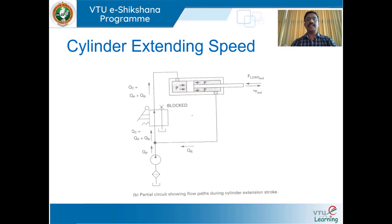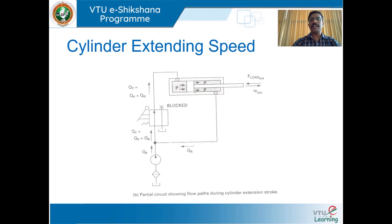We shall discuss the cylinder extending speed. A partial circuit shows flow paths during the cylinder extension stroke. The rod side oil is regenerated and, along with the pump flow, the regenerated oil enters into the blank end of the cylinder and cylinder extension takes place. The regenerative circuit is used to increase the extending speed of the cylinder — the extending speed will be greater than the normal double-acting cylinder.